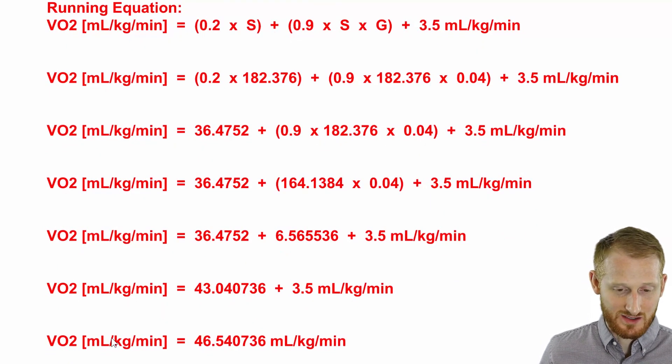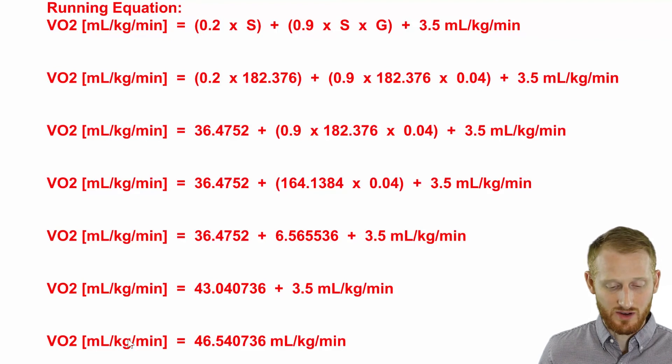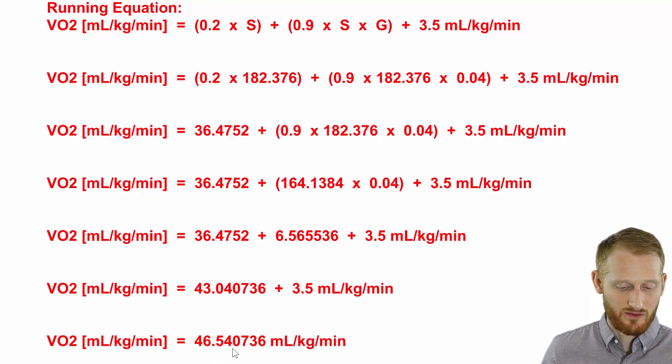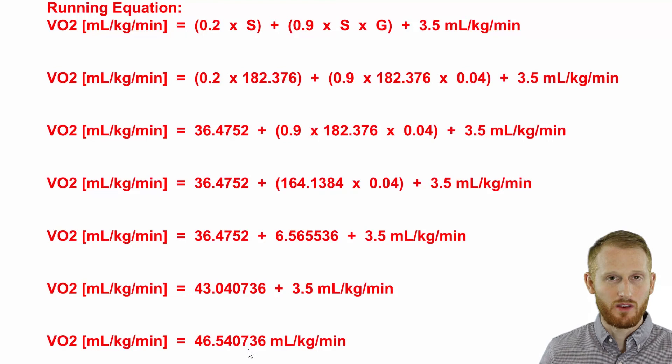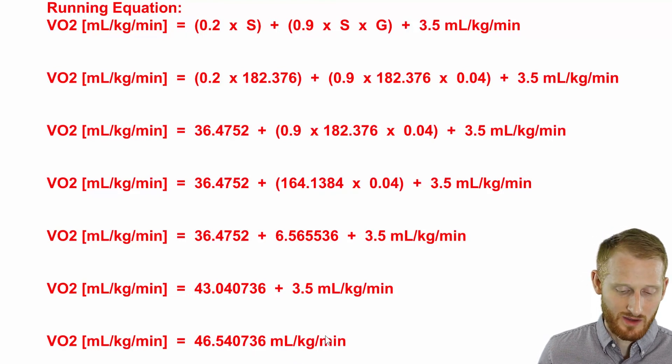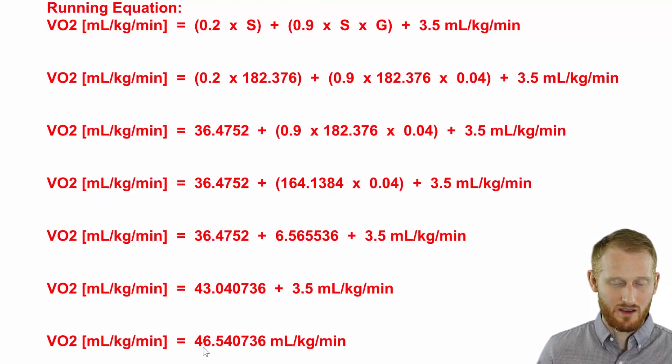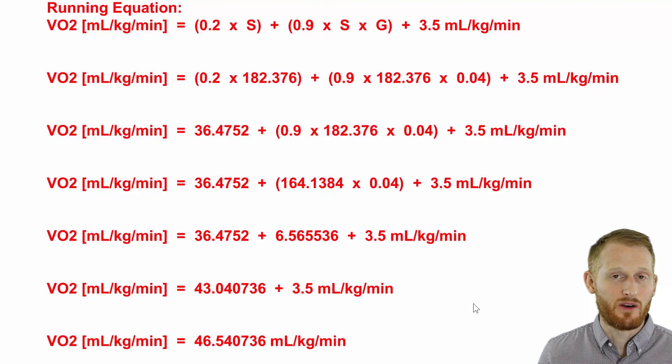of this individual running at this specific speed and grade 46.540736 milliliters of oxygen per kilogram of body mass per minute, which you would just round this at this point to 47 milliliters per kilogram per minute.